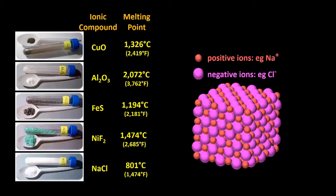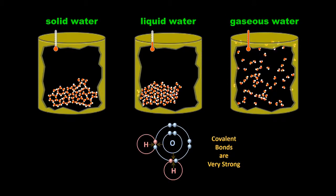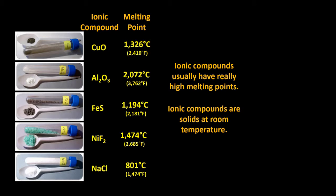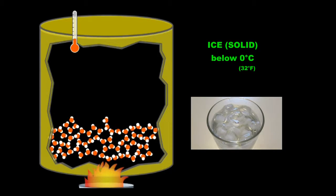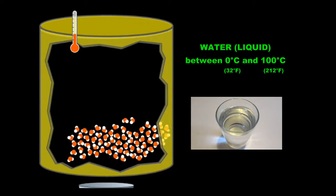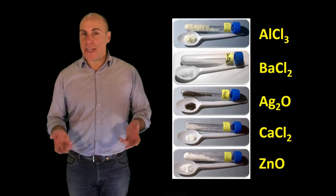We finish the program with a look at some of the differences between ionic compounds and covalent compounds, focusing in particular on why ionic compounds have high melting points, while most covalent compounds generally have low melting points. A transcript of the program and the student worksheet can be downloaded from our website.